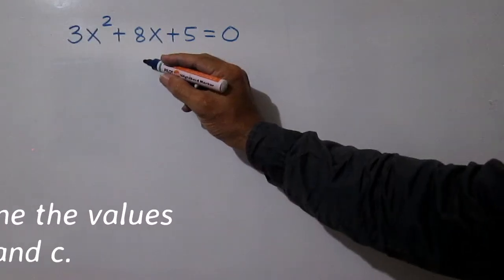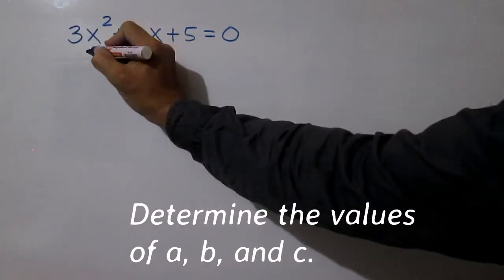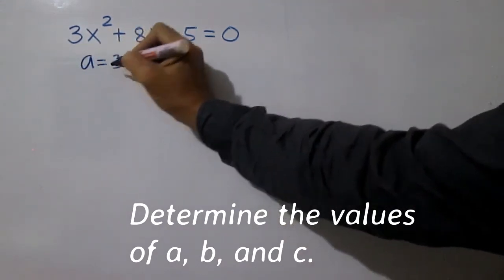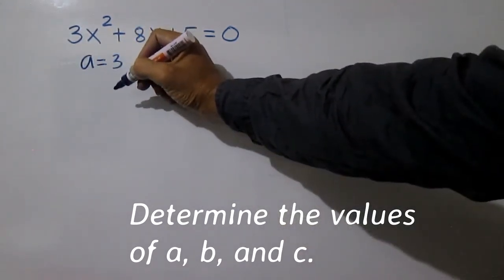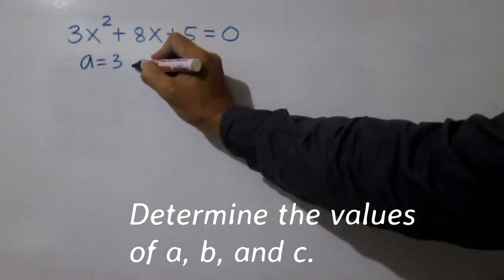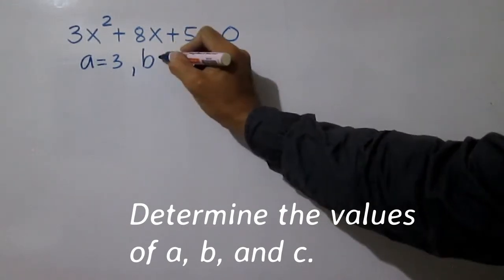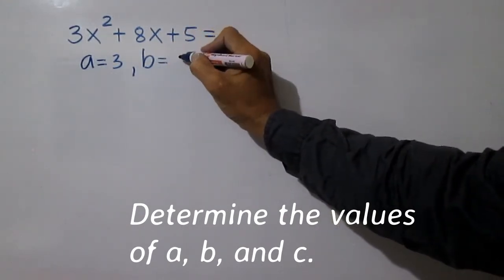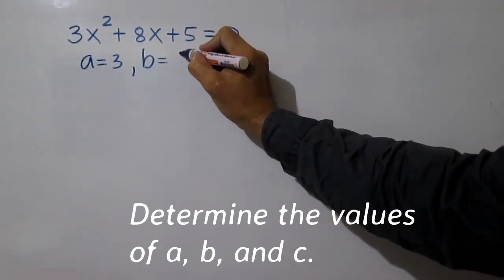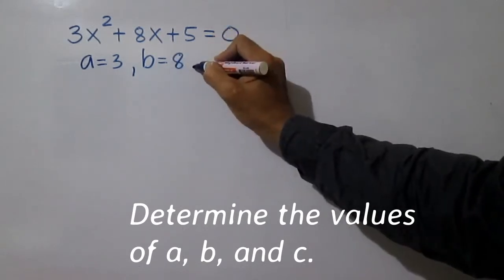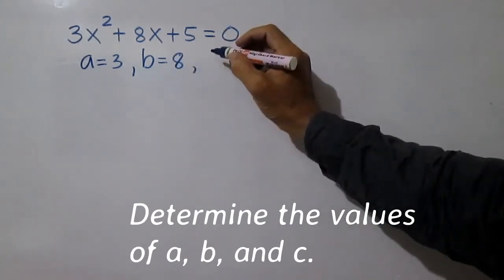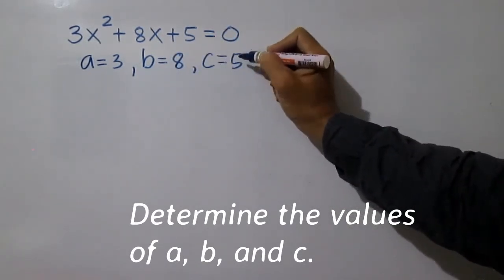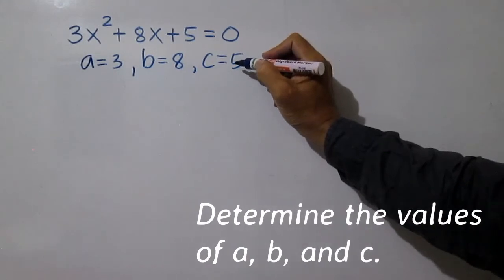First, determine the values of A, B, and C. A equals 3, B equals 8, and C is equal to 5.